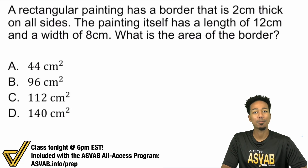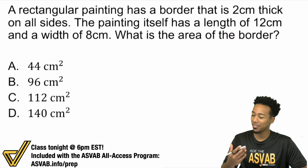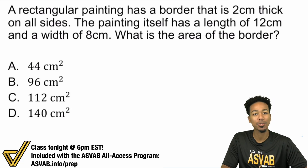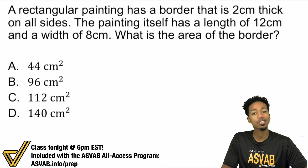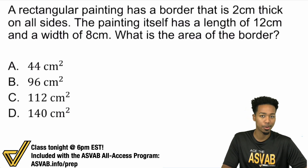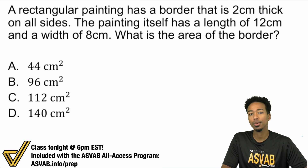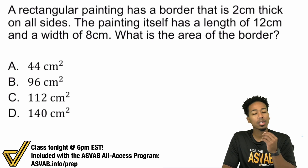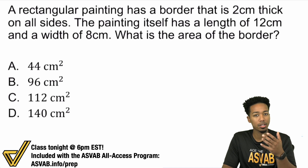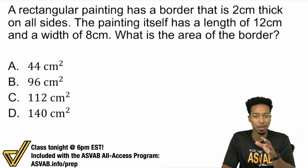What's going on, my ASVAB people? Anderson here, your ASVAB coach, and we've got ourselves a nice little word problem that many would consider a challenge problem. This has to do with area and perimeter, and I'm going to show you how to handle a problem like this so that whenever you see anything similar, you have that experience to understand how things might play a part.